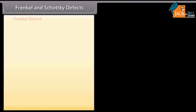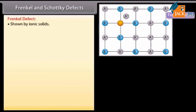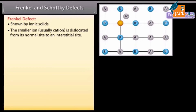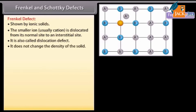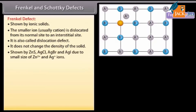Frenkel defect is shown by ionic solids. The smaller ion, usually a cation, is dislocated from its normal site to an interstitial site. It is also called a dislocation defect, and it does not change the density of the solid. It is shown by ZnS, AgCl, AgBr, and AgI, due to the small size of Zn²⁺ and Ag⁺ ions.